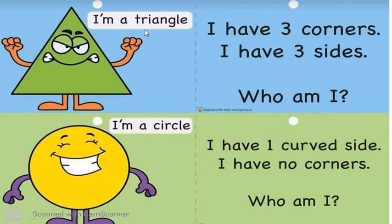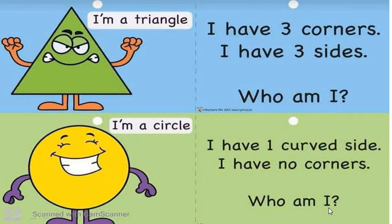The spelling of triangle is T-R-I-A-N-G-L-E. Now what is this? It says: I have one curved side. Please remember all these things about sides, corners, and curves. I have one curved side. I have no corners — is there any corner? No. Who am I? I am a circle. A circle is made up of one curved line. The spelling of circle is C-I-R-C-L-E.